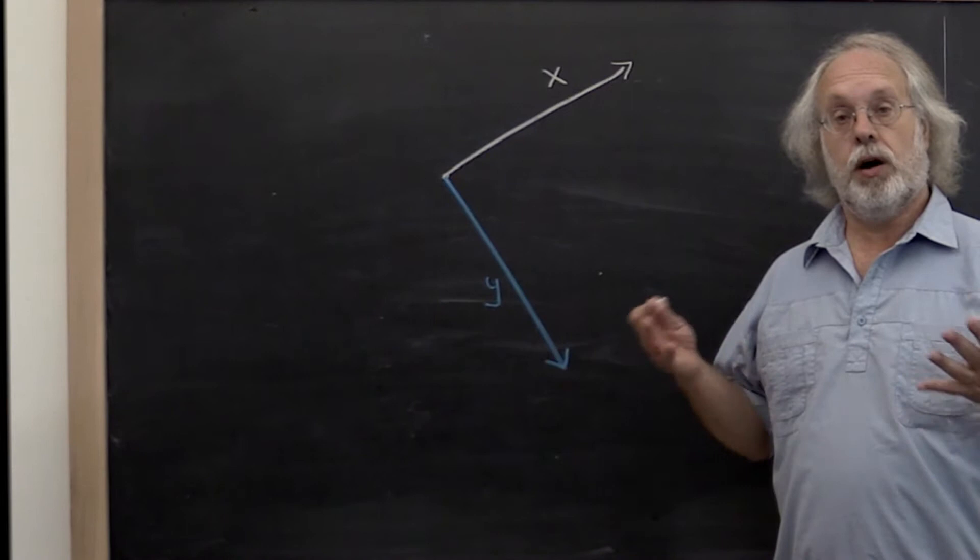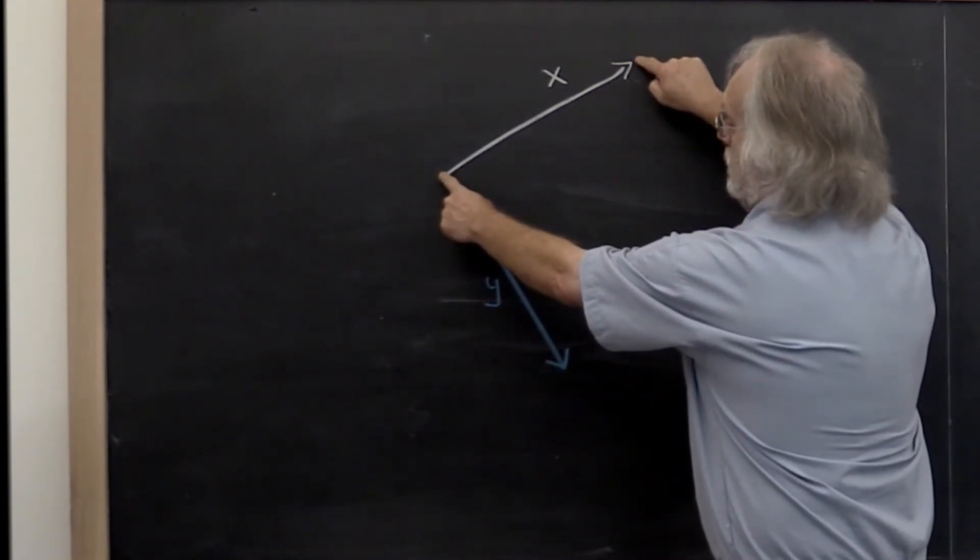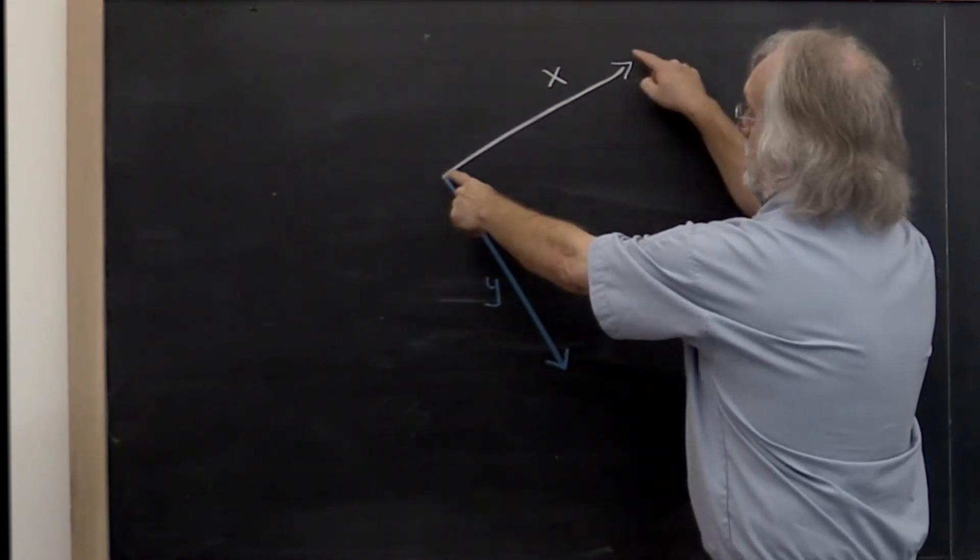Now what if we want to turn the problem around? What if we're given two vectors, vector x and vector y, of the same length?